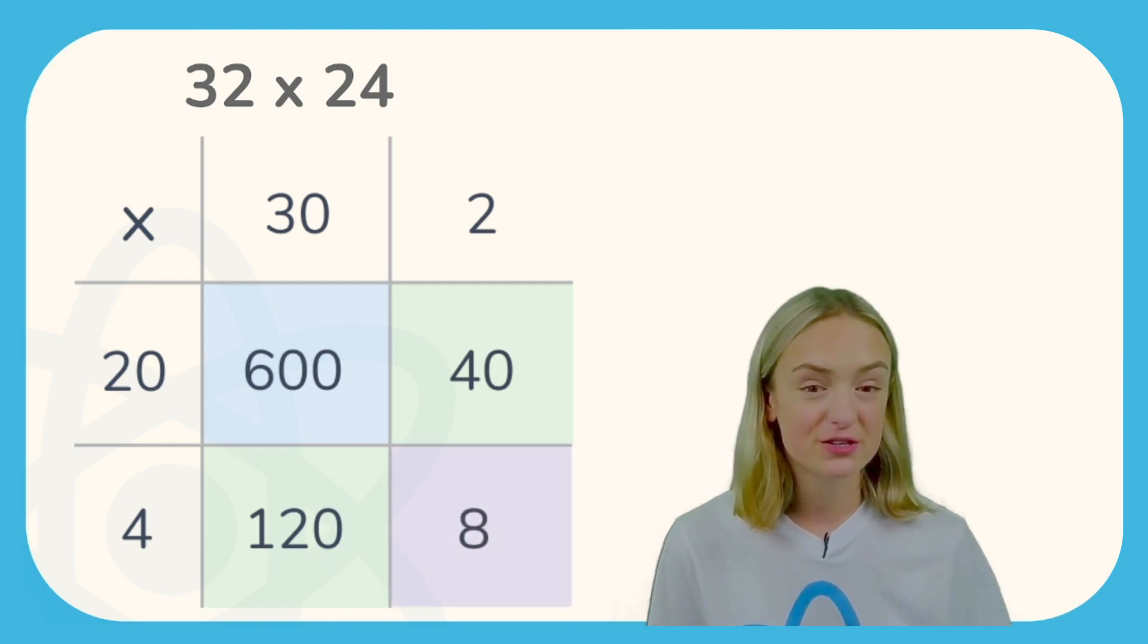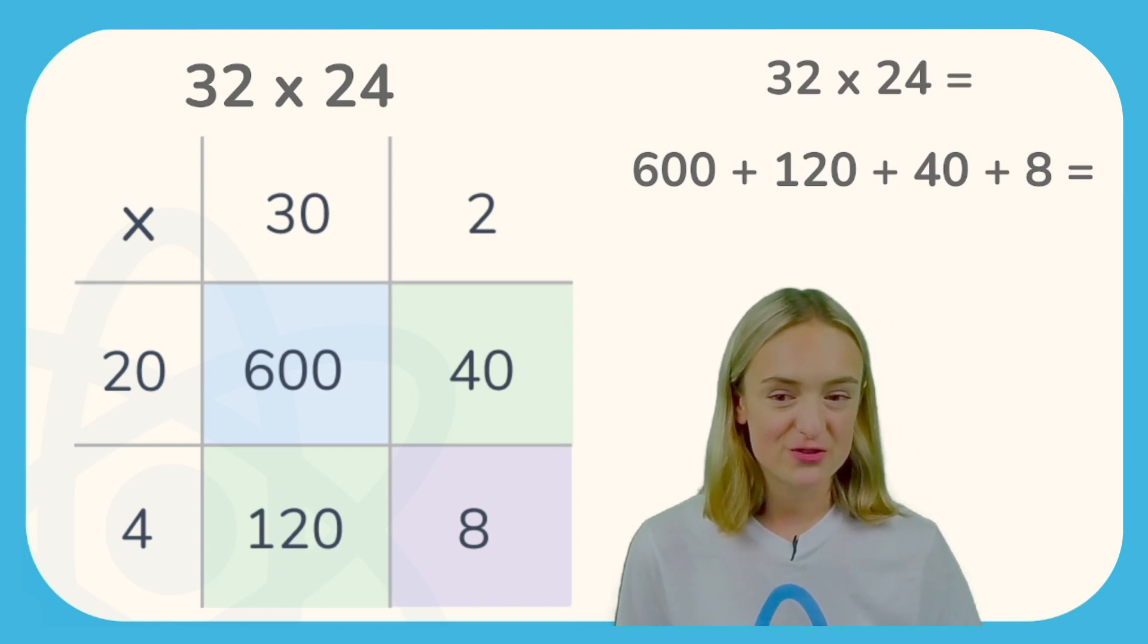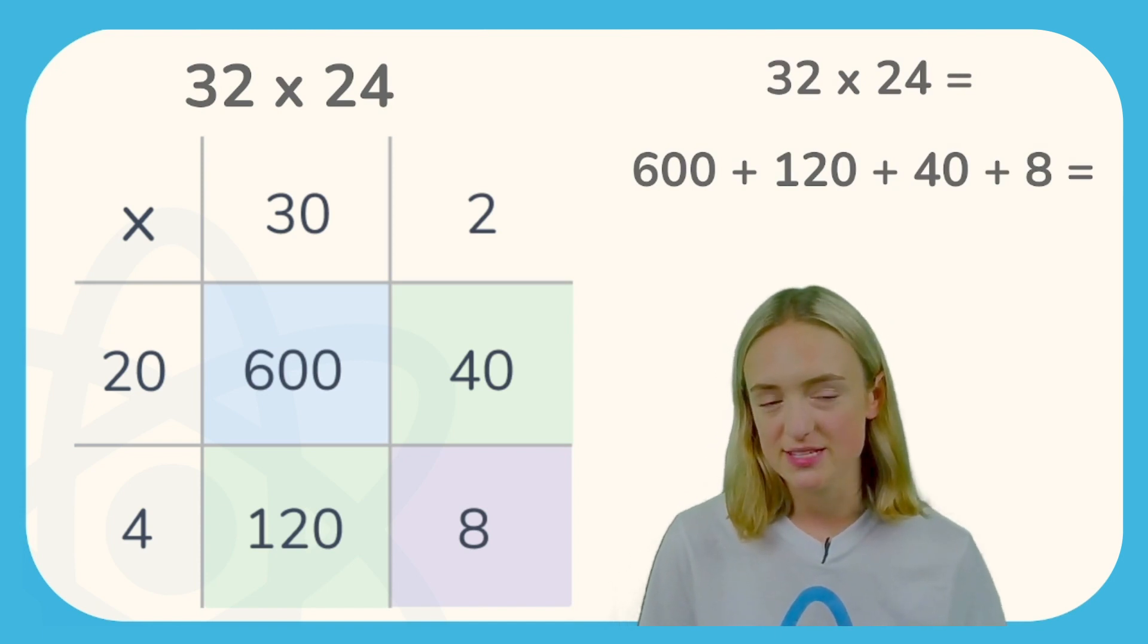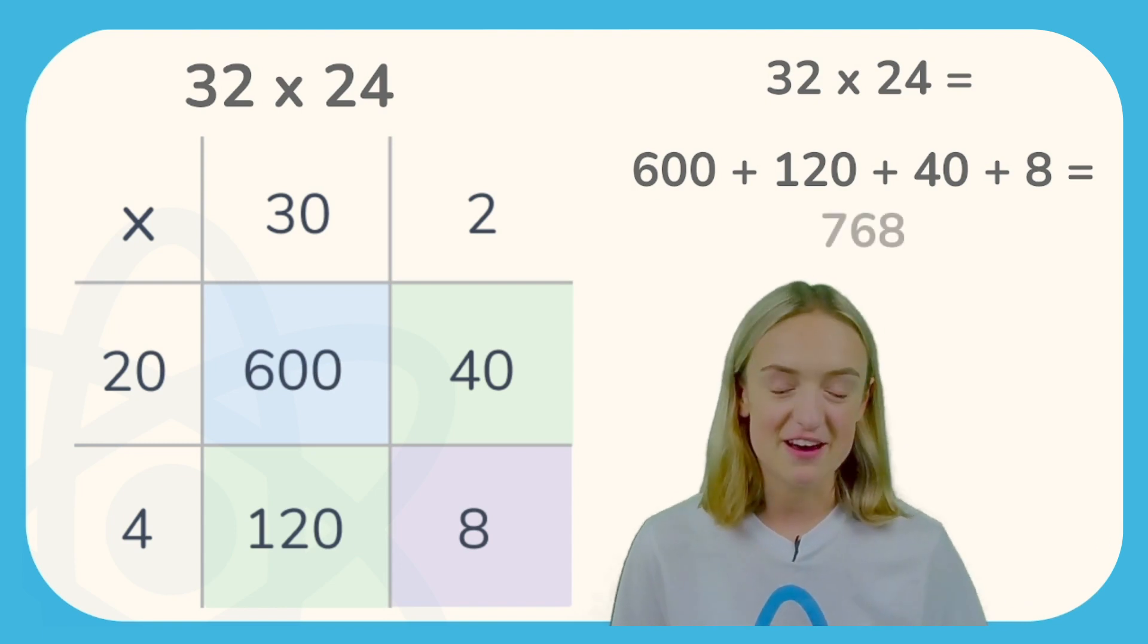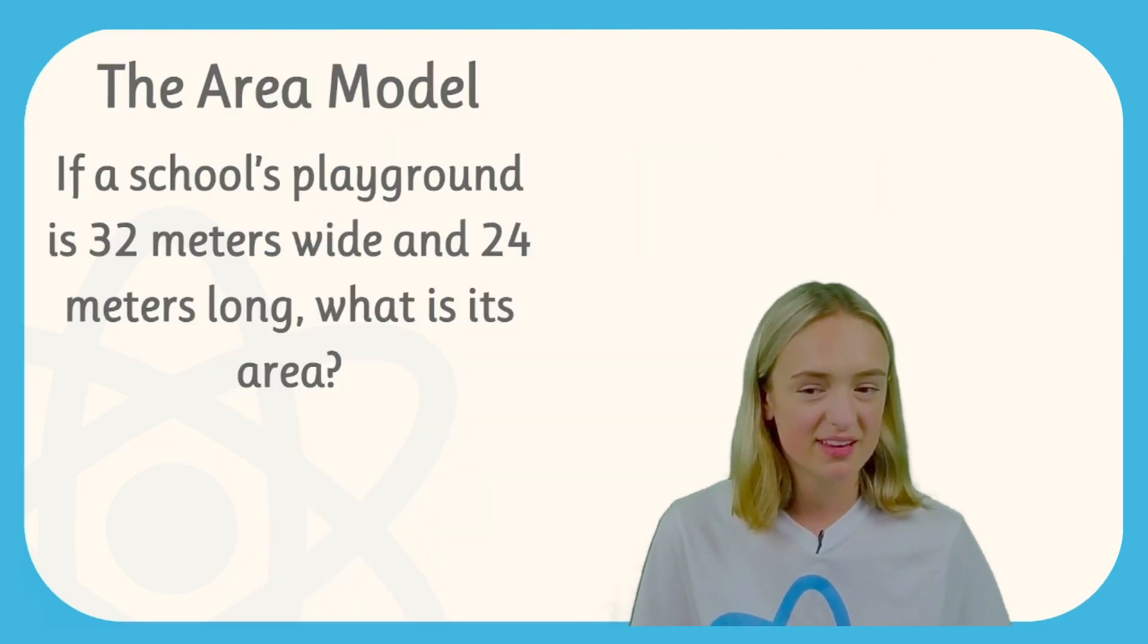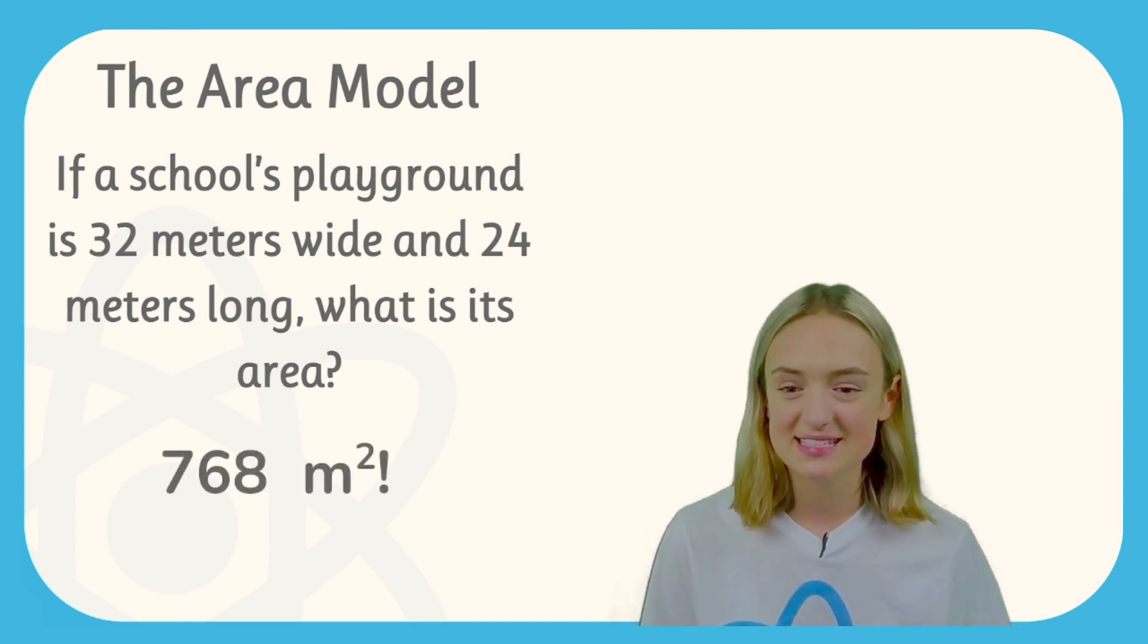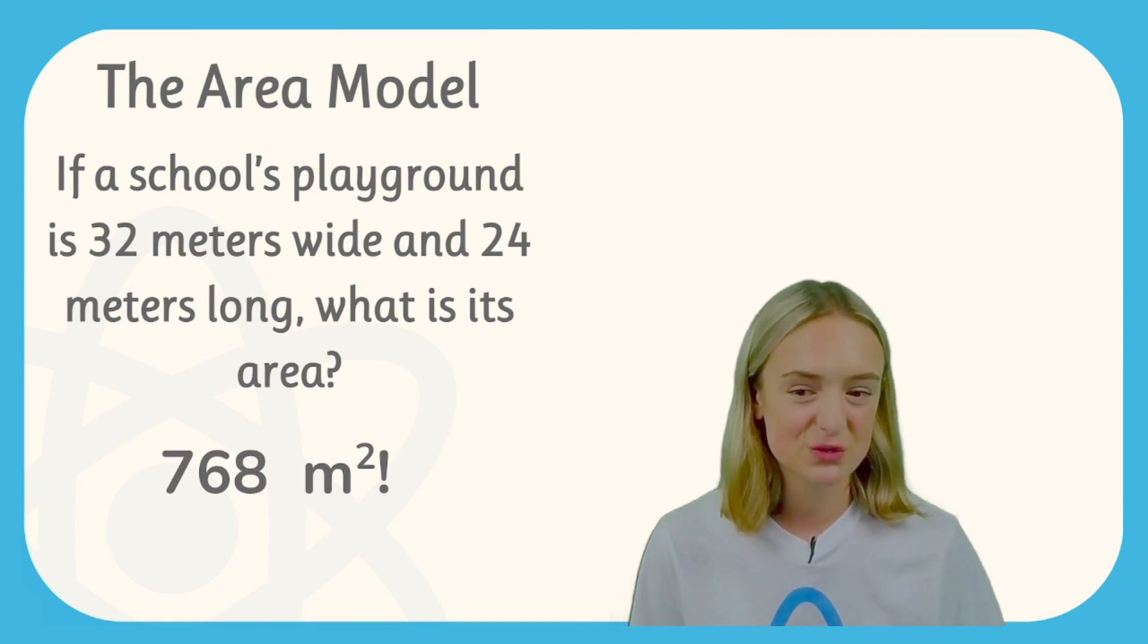Now the final step is that we just need to add all of these numbers together. So 600 plus 120 plus 40 plus 8 equals 768. And there we have our answer. So the school's playground is 768 meters squared.